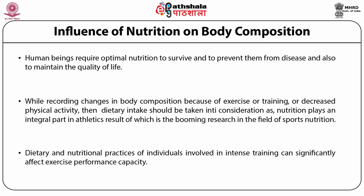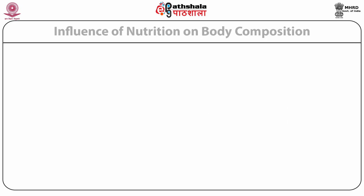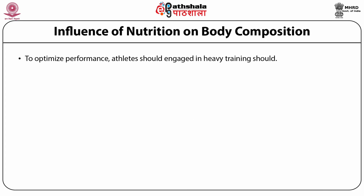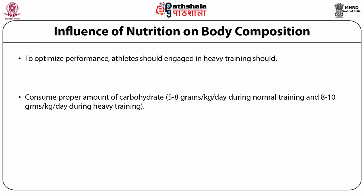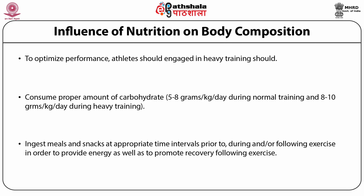Dietary and nutritional practices of individuals involved in intense training can significantly affect exercise performance capacity. To optimize performance, athletes should engage in heavy training and eat enough calories to offset energy expenditure. They should consume the proper amount of carbohydrates during normal and heavy training. They should take meals and snacks at appropriate intervals prior to, during, and following exercise in order to provide energy and promote recovery. Individuals involved in advanced training should only consider using nutritional supplements that have been found to be effective and safe means for improving performance capacity.